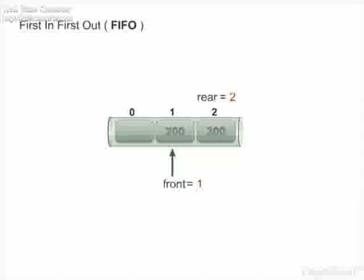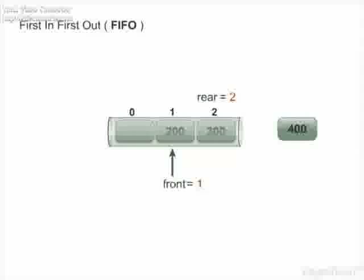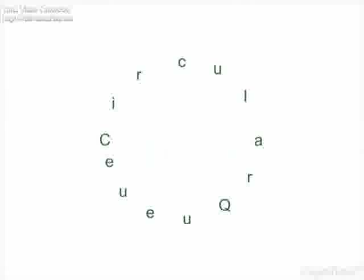Now suppose we want to insert more elements into the same queue. It is not possible as the queue is full, although there is space where element 100 was deleted. But we cannot utilize that space because a queue is a linear array. To overcome this problem, we use the concept of a circular queue.